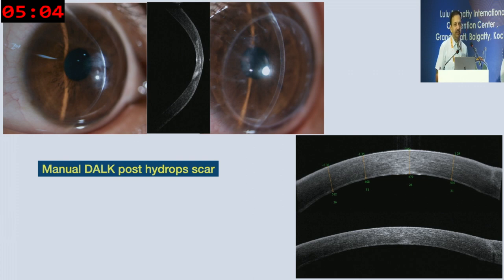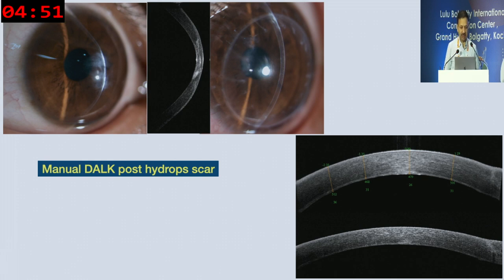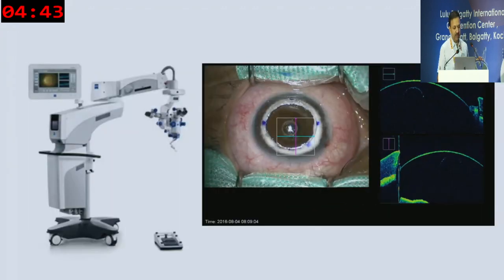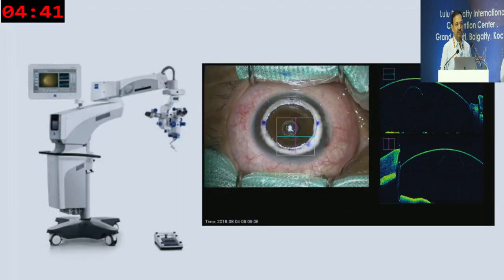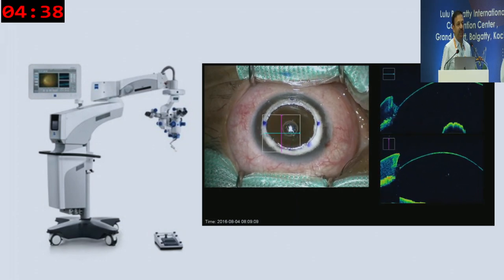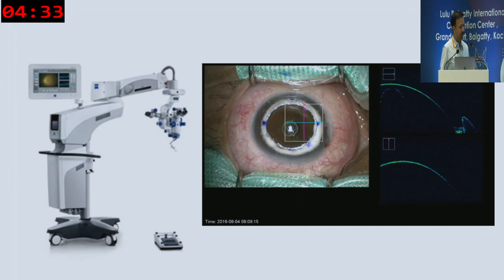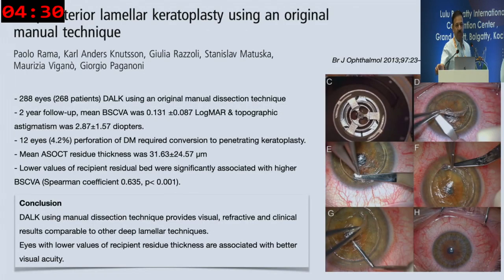Some clinical cases: a case of hydrops with posterior scar where manual DALK was performed — you can see the residual bed is only about 30 microns. If you can switch up those lights, we can see the slides better. This is another case where manual DALK is performed and the outcome looks pretty good. If you have access to intraoperative OCT in real time, you can see the amount of residual stroma left behind — very useful during manual DALK surgery.